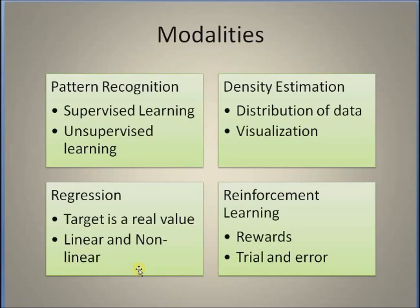The problem of reinforcement learning is different from the classical supervised and unsupervised learning approach. Here, there is no training data. There is no set of target vectors and no set of defined categories. The problem is to determine or define both the categories and the strategies to learn those categories.